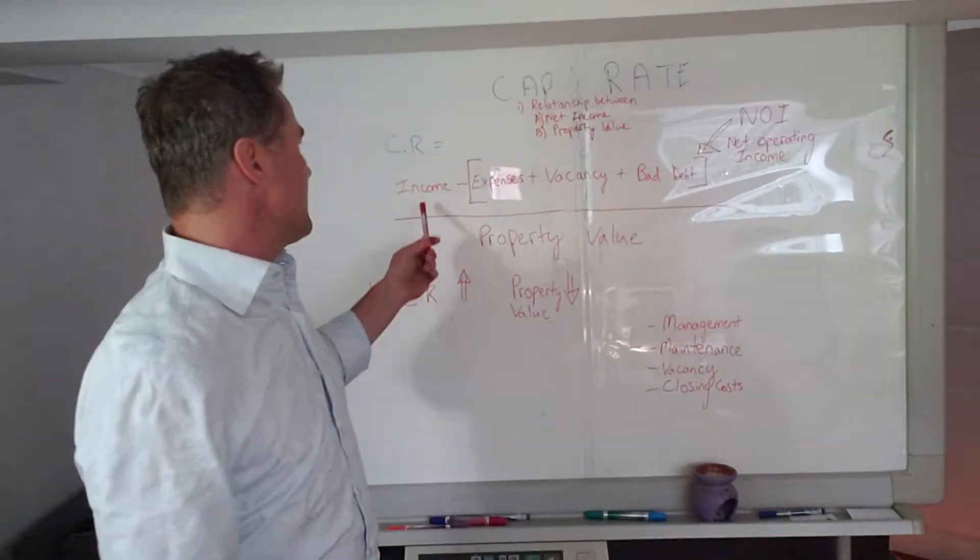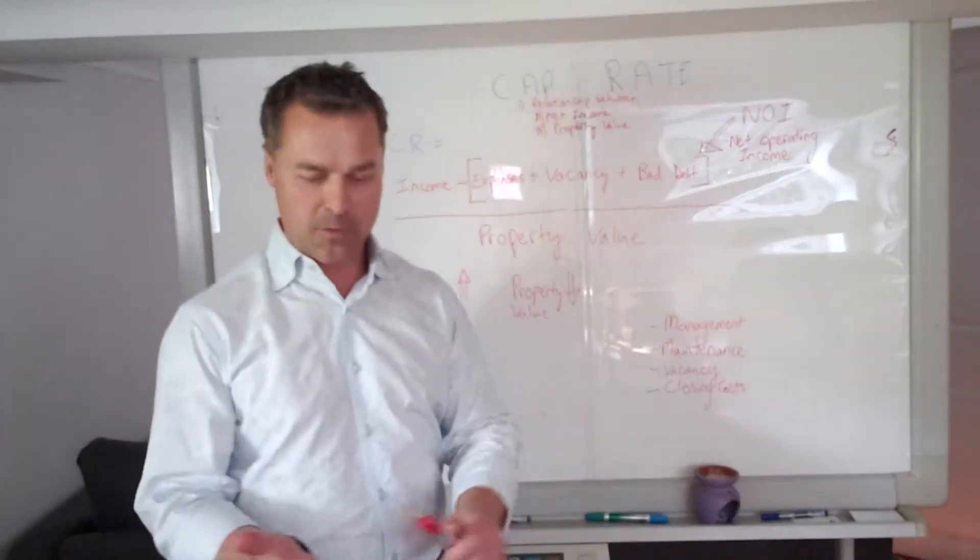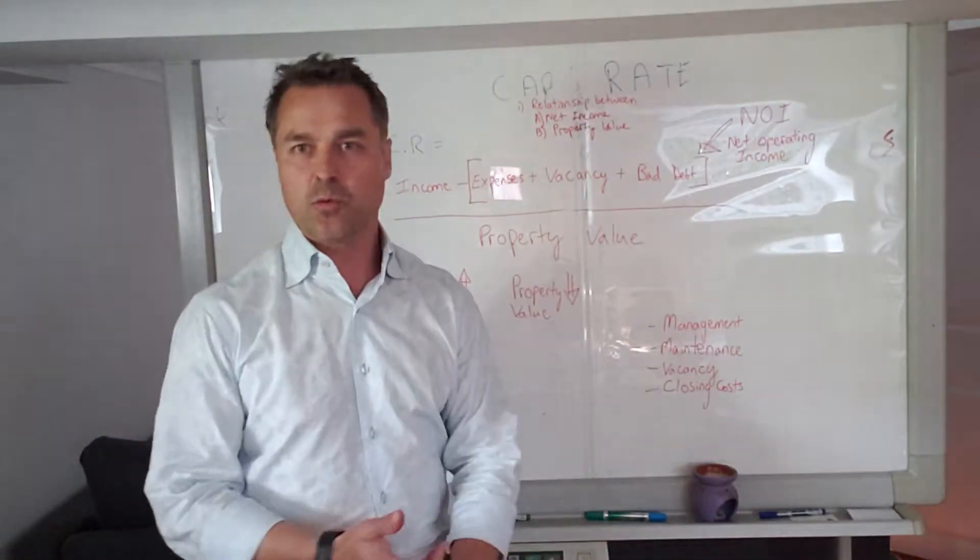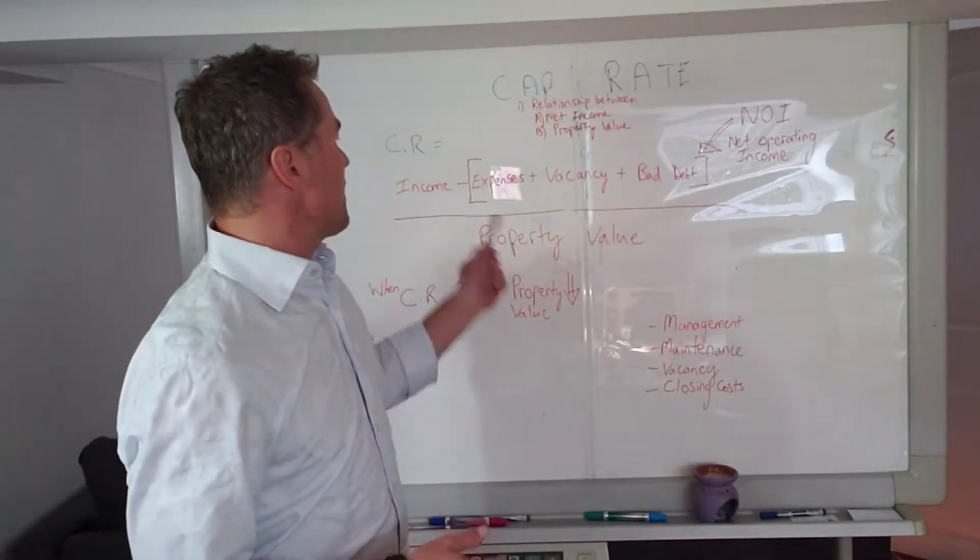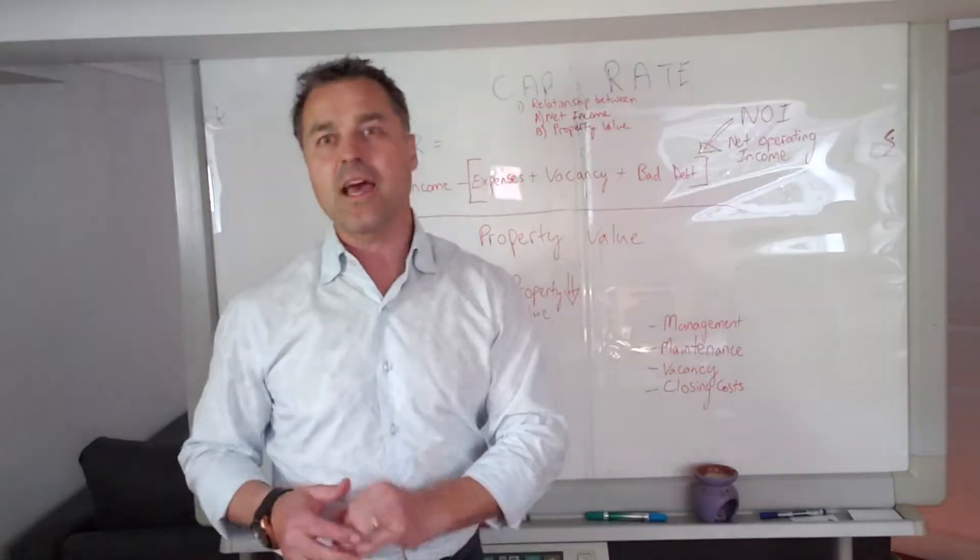We basically take the total income—it could be anything from laundry to rent to storage space—and subtract the expenses, the vacancy, and the bad debt.